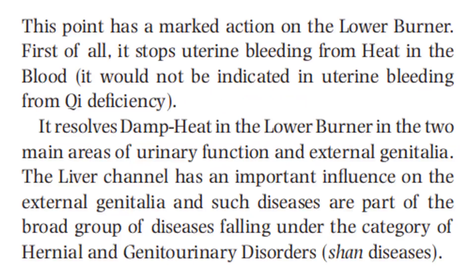This point has a marked action on the lower burner. First of all, it stops uterine bleeding from heat in the blood. It would not be indicated in uterine bleeding from Qi deficiency. It resolves damp heat in the lower burner in two main areas: urinary function and external genitalia. The liver channel has an important influence on the external genitalia, and such diseases are part of the broad group of diseases falling under the category of genital and genitourinary disorders.